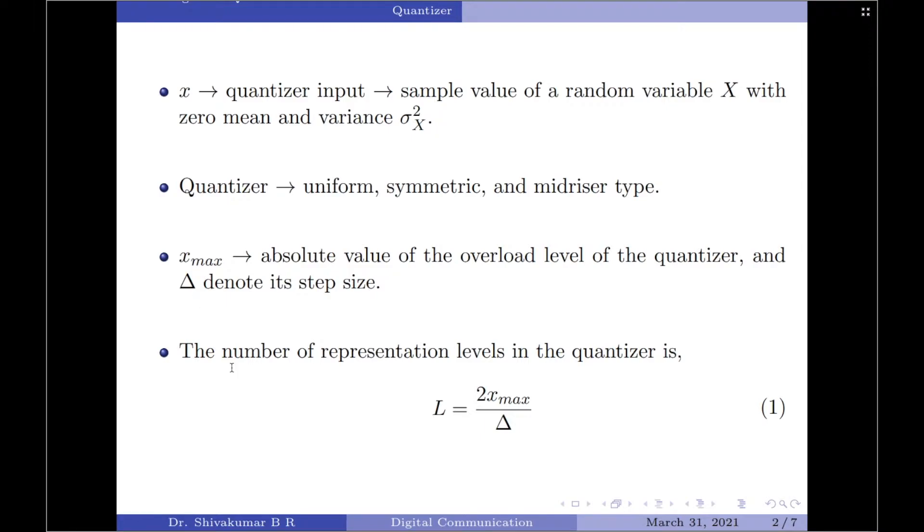We may now express the number of representation levels in the mid-riser quantizer as L equals 2x_max divided by Δ, where x_max is the absolute value of the overload level of the quantizer and Δ is its step size. This is one way of representing the number of representation levels in the quantizer. Further, we know that for a binary codeword of n bits,